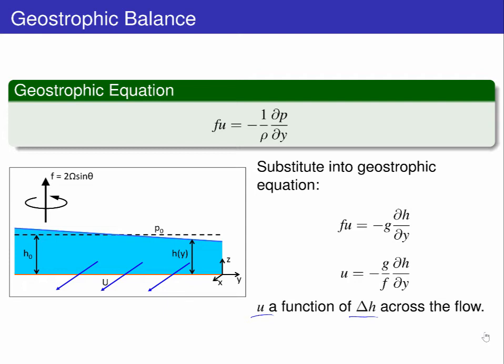Free surface slopes are something that we can readily measure, particularly with satellite observations, and this relation gives us some meaningful information about the velocity field from a measurable quantity.